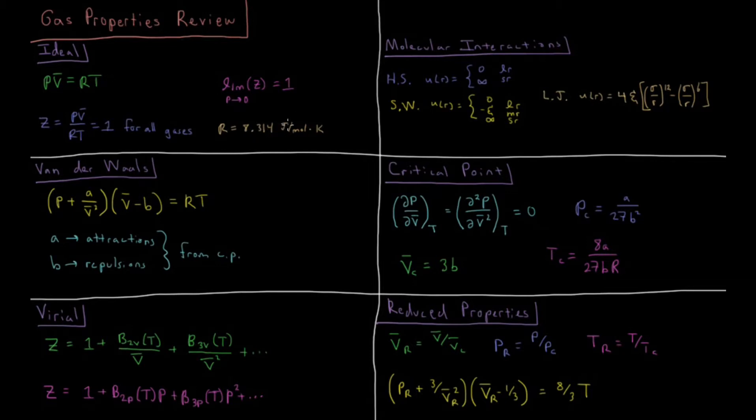The gas constant relates energy and temperature, with a value of 8.314 joules per mol kelvin. We define the compressibility factor Z as the pressure times molar volume divided by R times temperature, which is equal to 1 for all ideal gases.